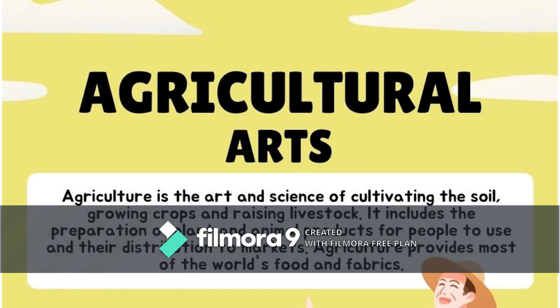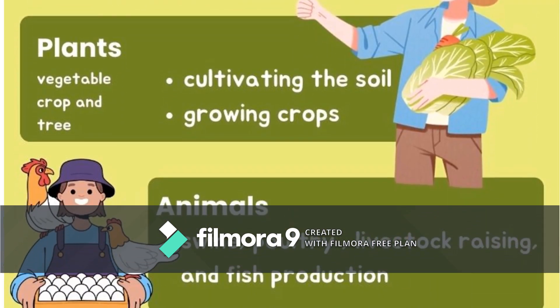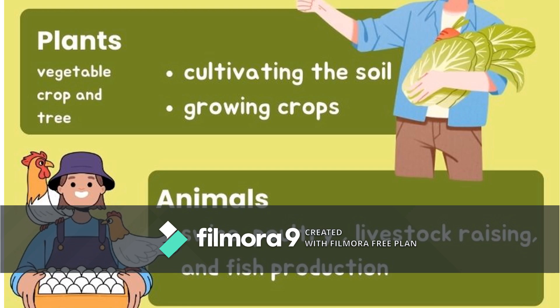So let's have a short review. What is agricultural arts? Agriculture is the art and science of cultivating the soil, growing crops, and raising livestock. It includes the preparation of plant and animal products for people to use and their distribution to markets. Agriculture provides most of the world's food and fabrics. Agricultural arts comprises plants like vegetables, crops, and trees, and also comprises animals — swine, poultry, livestock raising, and fish production.